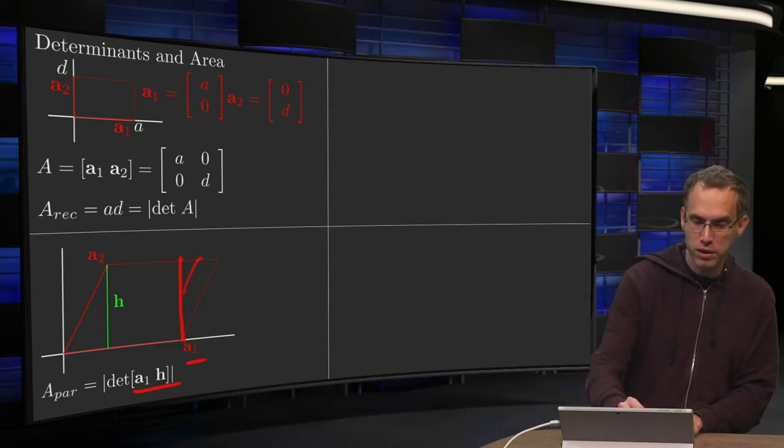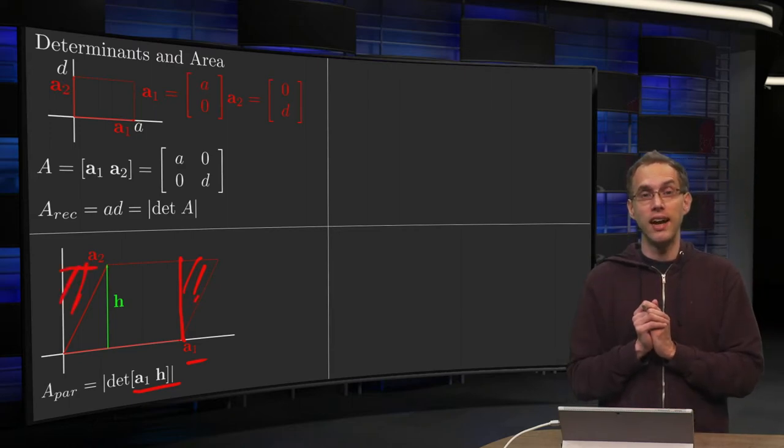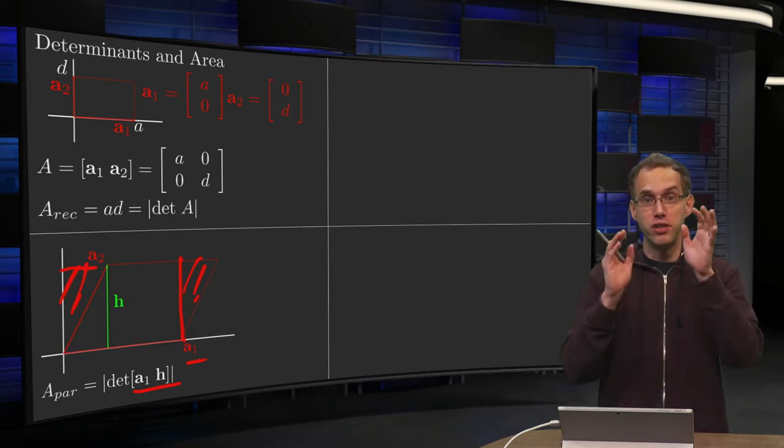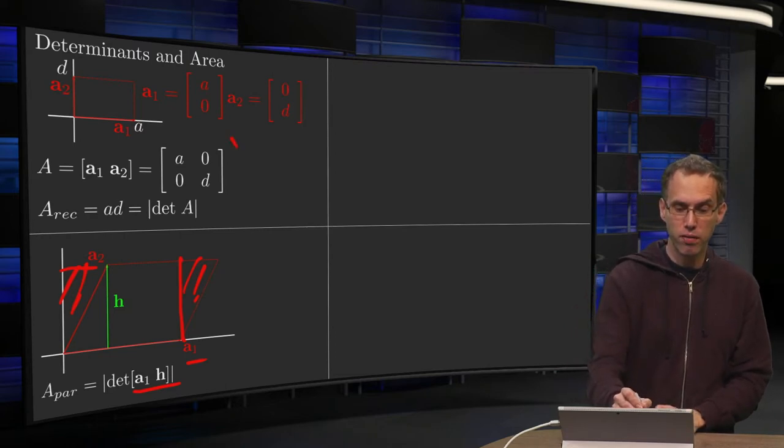So in this case, the area of your parallelogram equals the determinant of the matrix containing a₁ and h, similar to what's happening over here.